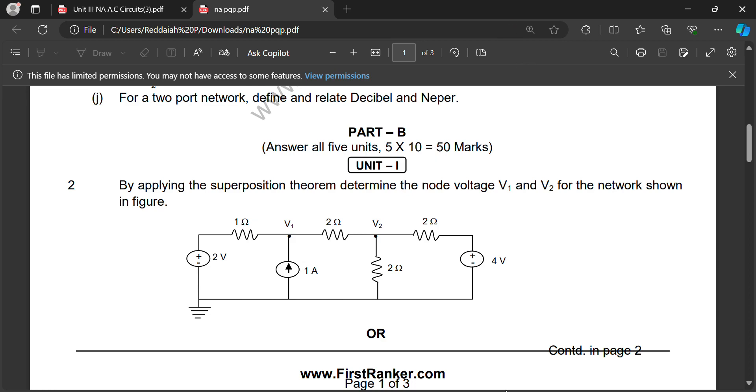Coming to ten most questions, network analysis. By applying superposition theorem, determine the node voltages V1 and V2 for the network shown below. We have to apply superposition theorem. We have two sources. V1 and V2 are the node voltages we have to find by using superposition theorem.